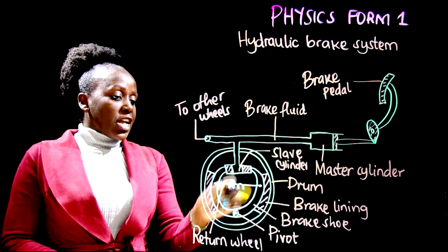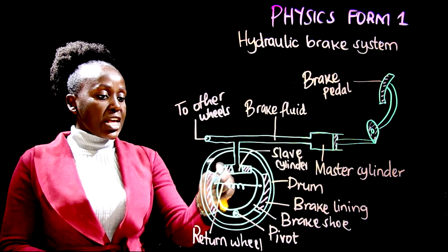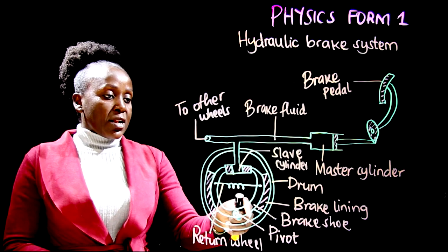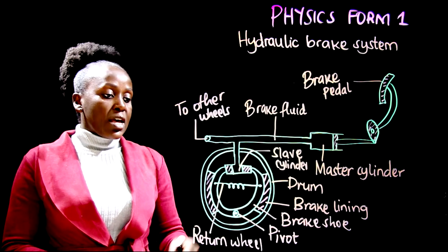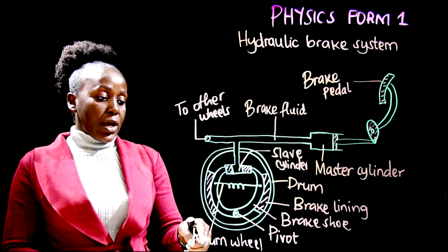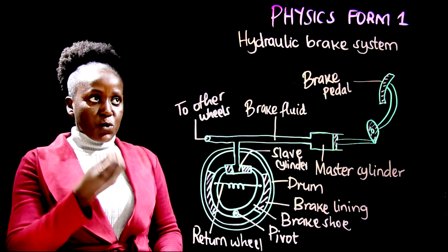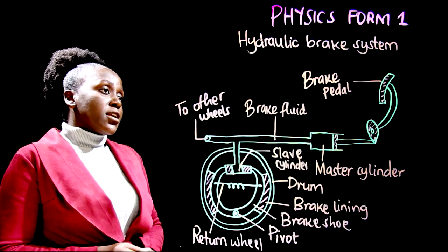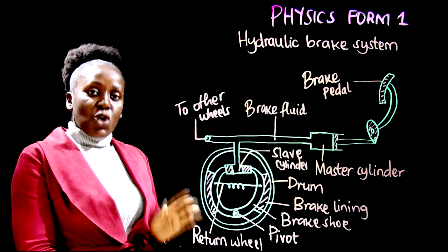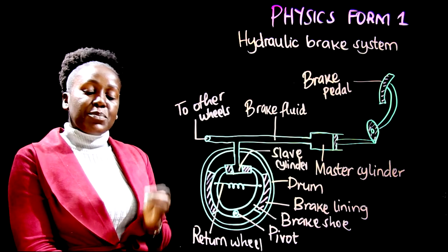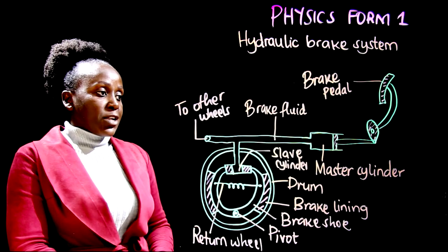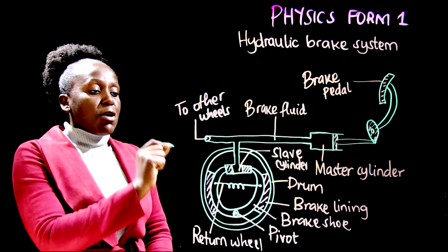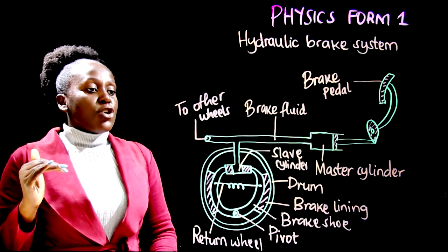The slave cylinder is connected to the brake shoe. This region is the brake shoe, then after the brake shoe we have the brake lining, after the brake lining we have the drum, in the middle we have the return spring, and at this point we have the pivot where the brake shoe is held in place. When you press on the brake pedal, you apply force on an area, which creates pressure. That pressure is felt in the master cylinder and, since it's a fluid inside, is transmitted equally to all the other wheels according to Pascal's principle.